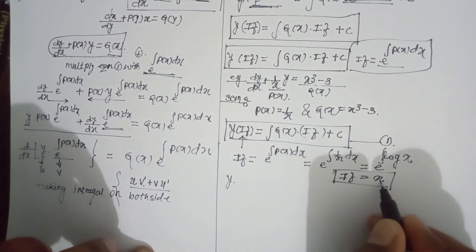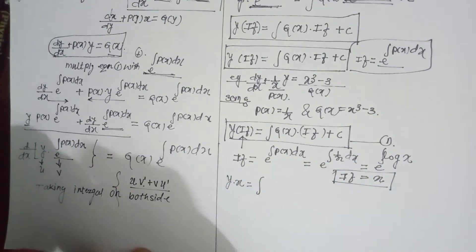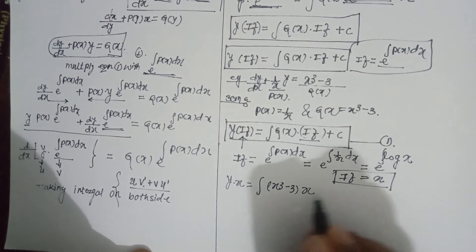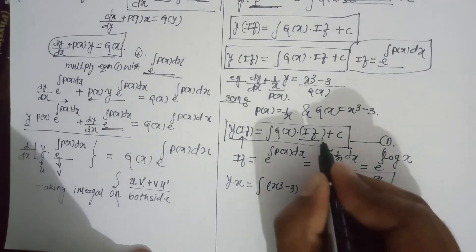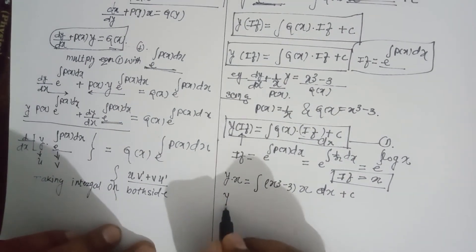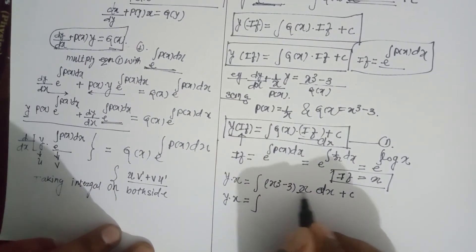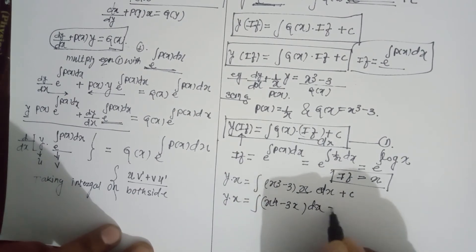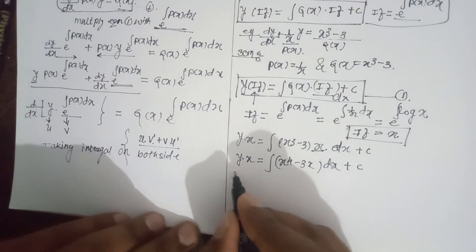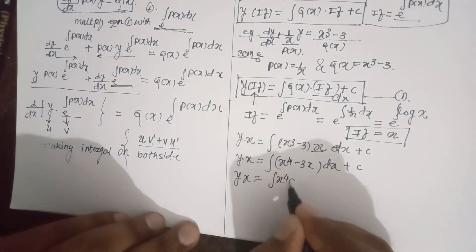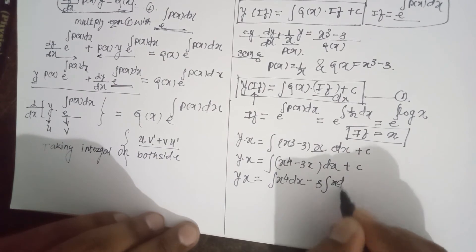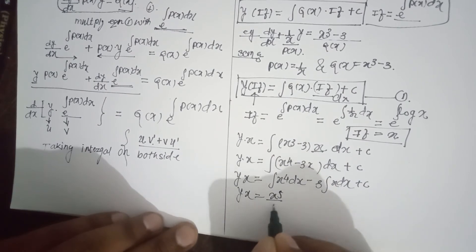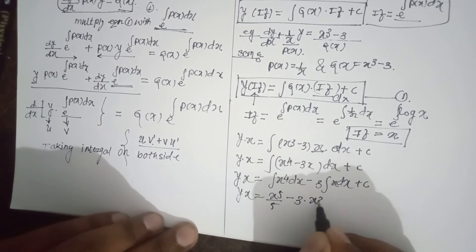Now putting the integrating factor into the general solution: y into x equals integral of Q(x) times x dx plus C, which is integral of (x³ minus 3) times x dx plus C. Multiplying x into the bracket: integral of (x⁴ minus 3x) dx plus C. So: y·x equals x⁵/5 minus 3·x²/2 plus C.